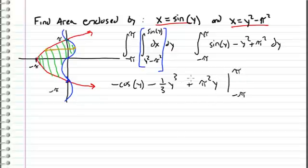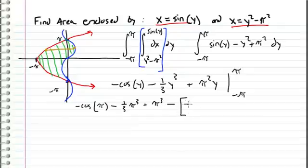Let's go ahead and evaluate this expression now. When we plug in pi we get negative cosine of pi minus one third of pi cubed plus pi cubed. Then minus, now let's plug in negative pi: negative cosine of negative pi minus one third times negative pi cubed plus pi squared times negative pi.